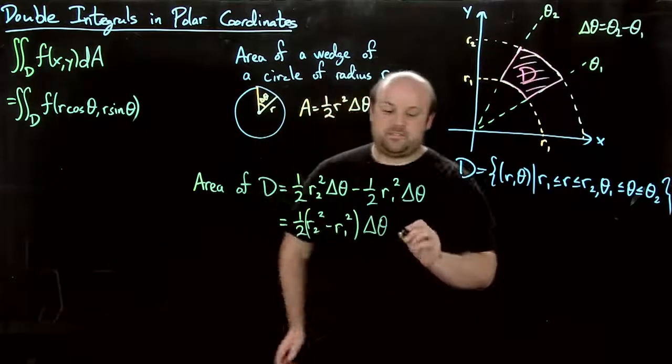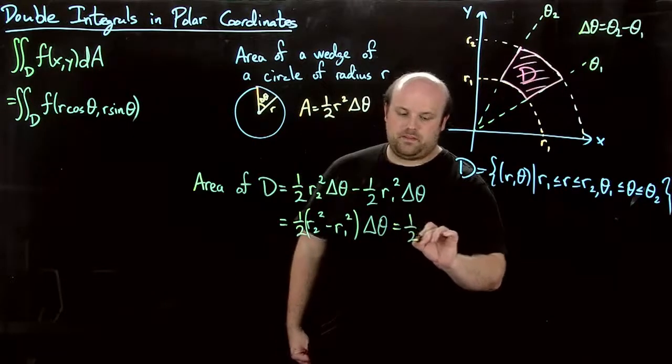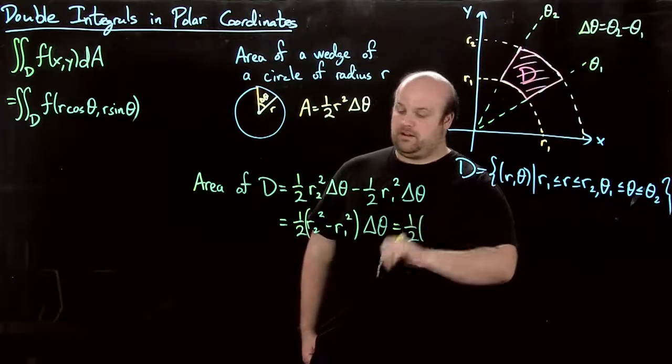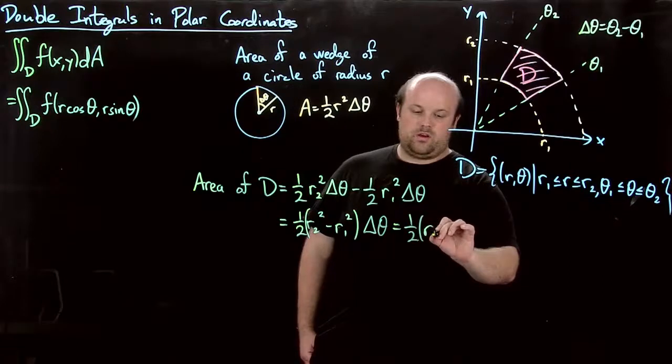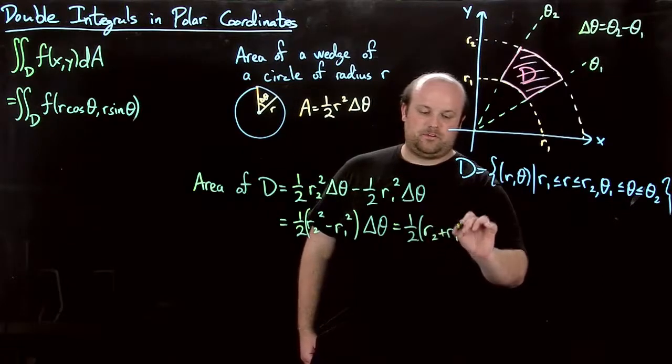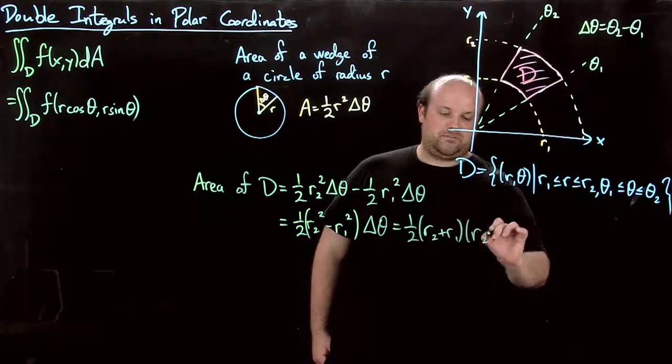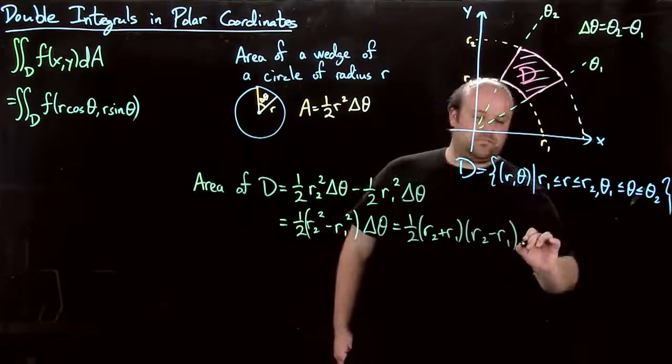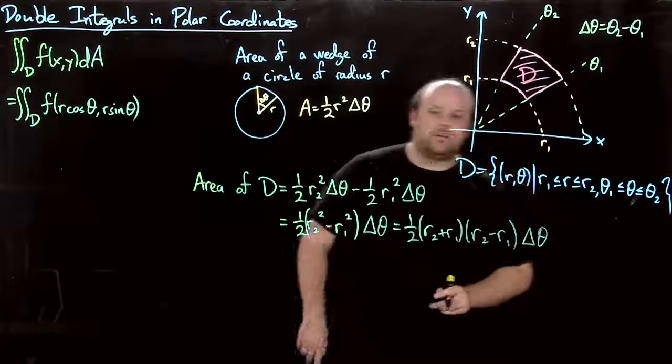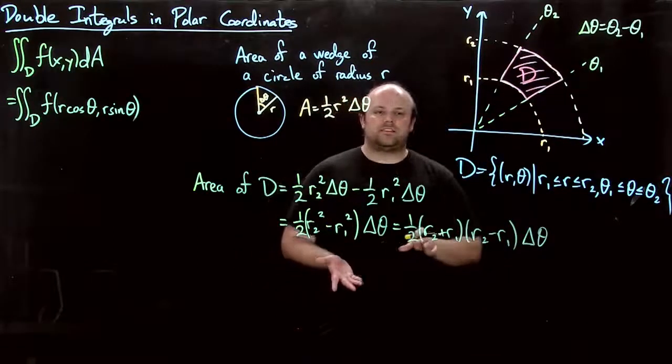And now we can factor this as a difference of squares into one-half r two plus r one, r two minus r one, delta theta. Now let's look at what these are.